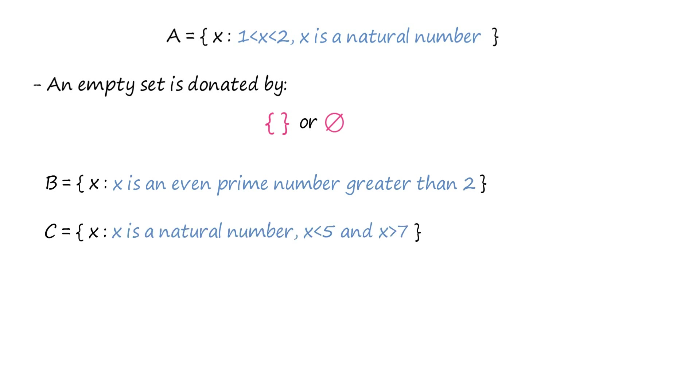The members of set C are the natural numbers less than 5 and greater than 7. Since no number can be simultaneously less than 5 and greater than 7, C is an empty set.